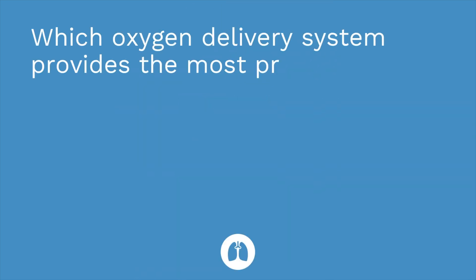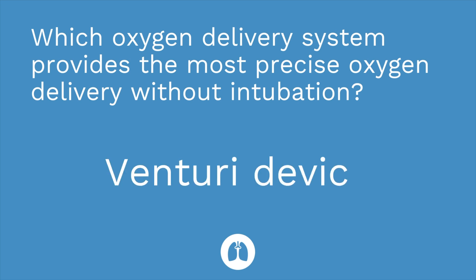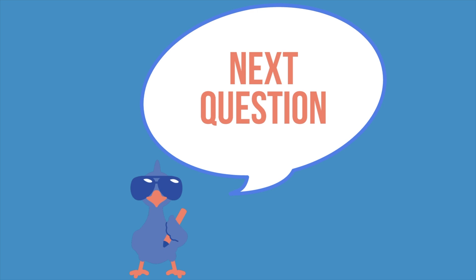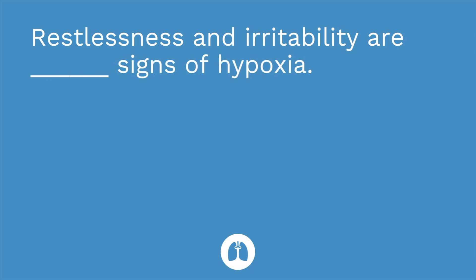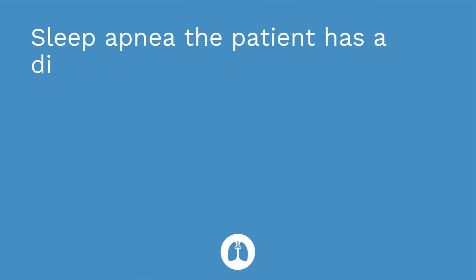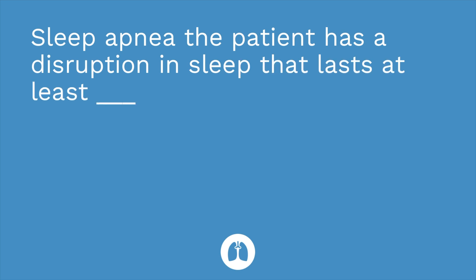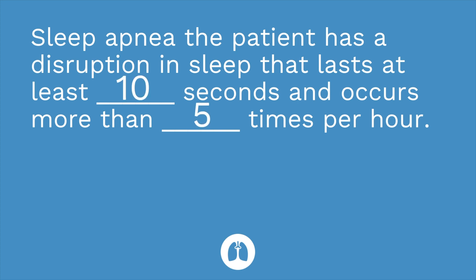Time for a quiz — I have three questions. Question one: which oxygen delivery system provides the most precise oxygen delivery without intubation? The answer is the Venturi device. Question two, fill in the blank: restlessness and irritability are blank signs of hypoxia. The answer is early. Question three: with sleep apnea, the patient has a disruption in sleep that lasts at least blank seconds and occurs more than blank times per hour. The answer is 10 seconds and 5 times.